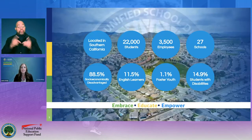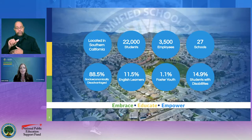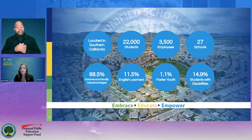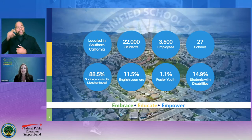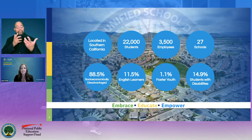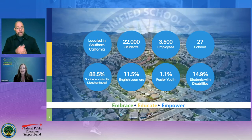Our district is located in the small city of Hemet, California, which resides in Riverside County in Southern California. We serve approximately 22,000 students from very diverse backgrounds. A significant percentage of our students come from socioeconomically disadvantaged homes, which means they come to us with a high level of need. About 3,500 employees serve the students of Hemet amongst 27 schools, with a strong commitment to meeting our district's mission of embrace, educate, and empower every student, every day.